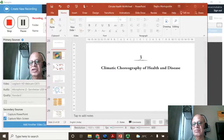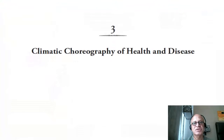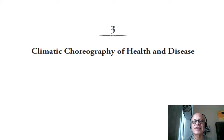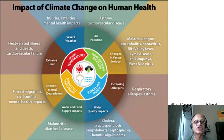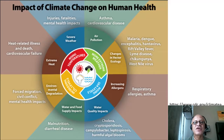A student was telling me to look up some tech guru to improve the aesthetics of my podcast, but I'm not going to bother with it now. Hopefully you will find these useful anyway. Let's look at the third chapter in this Tony Michaels book on climate and health. It's called 'Climatic Choreography of Health and Disease' — quite an evocative title for the chapter.